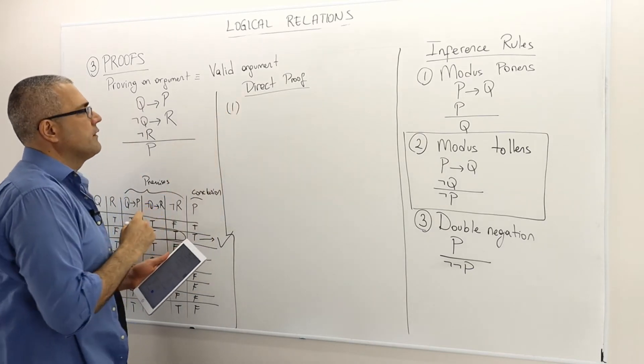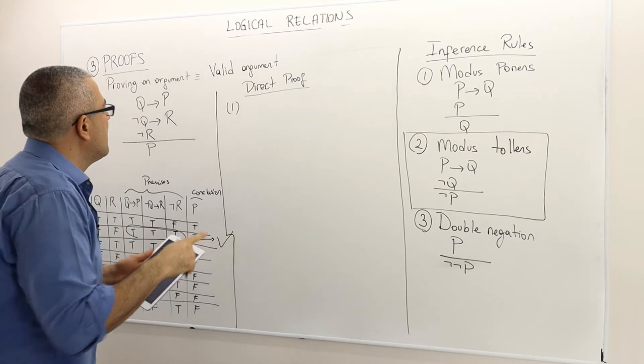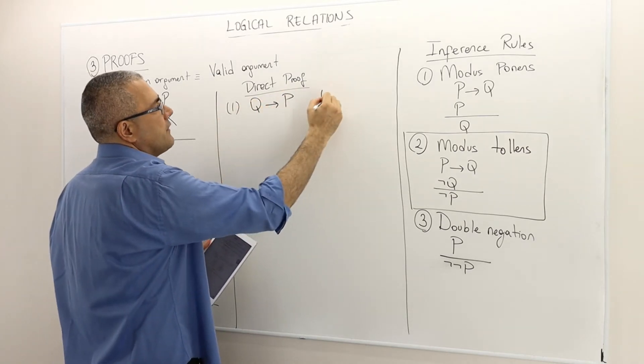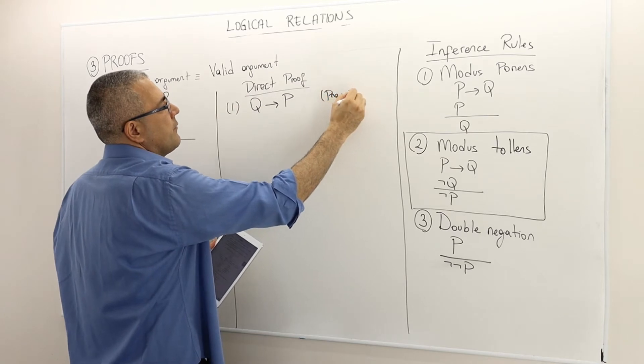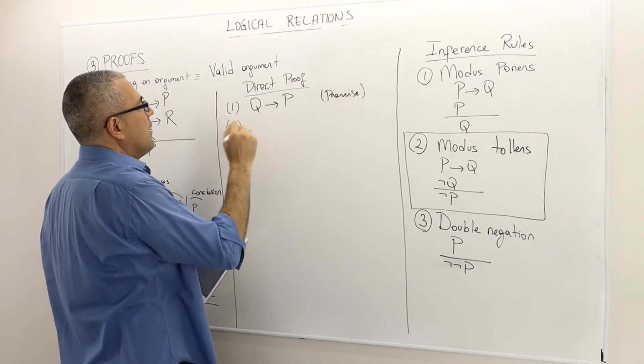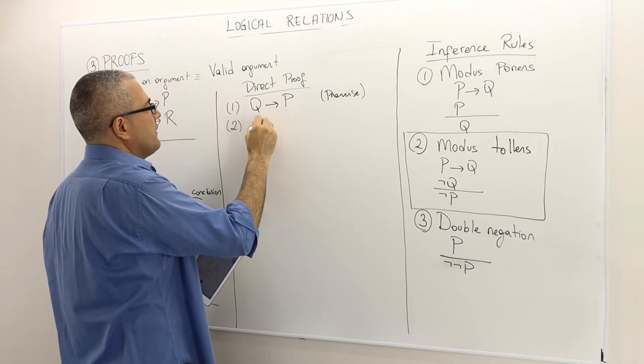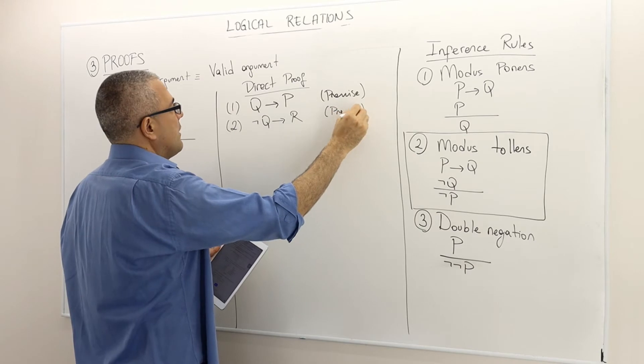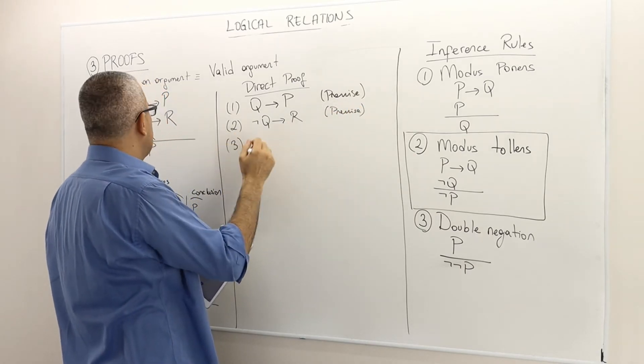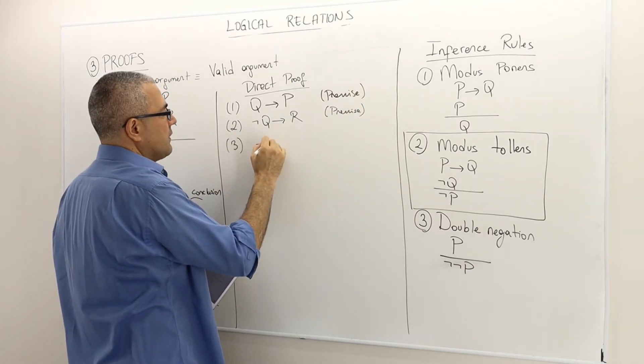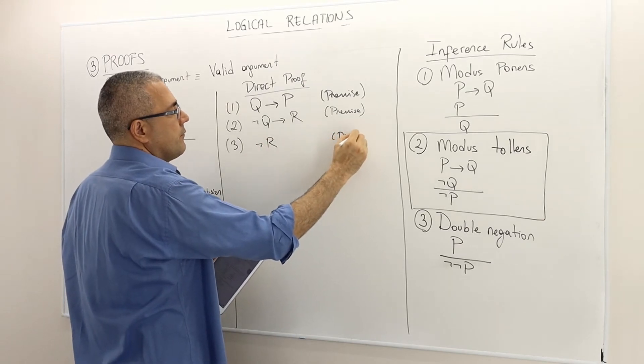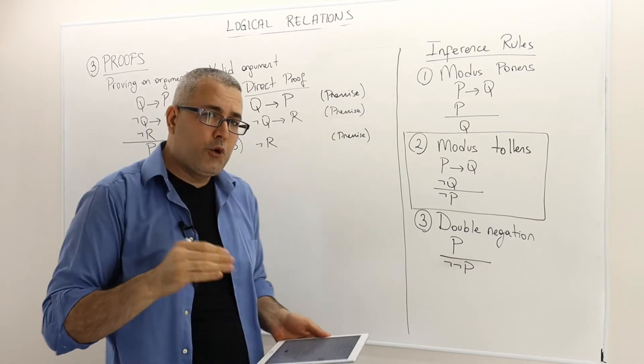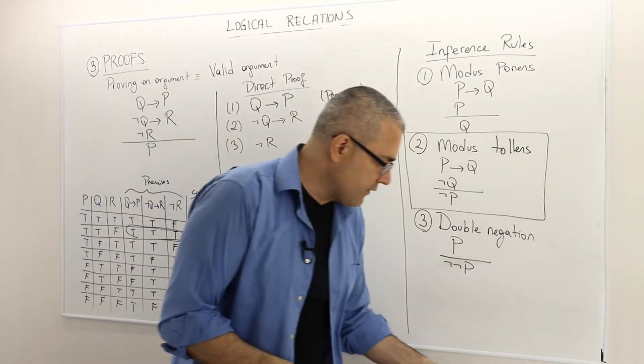So I am going to rewrite this argument. And I'm going to number them, number everything, so that I can refer back easily. So the first premise is Q implies P. This is premise. The second argument or premise is not Q implies R. This is also premise. And then the third one is not R. This is also premise.